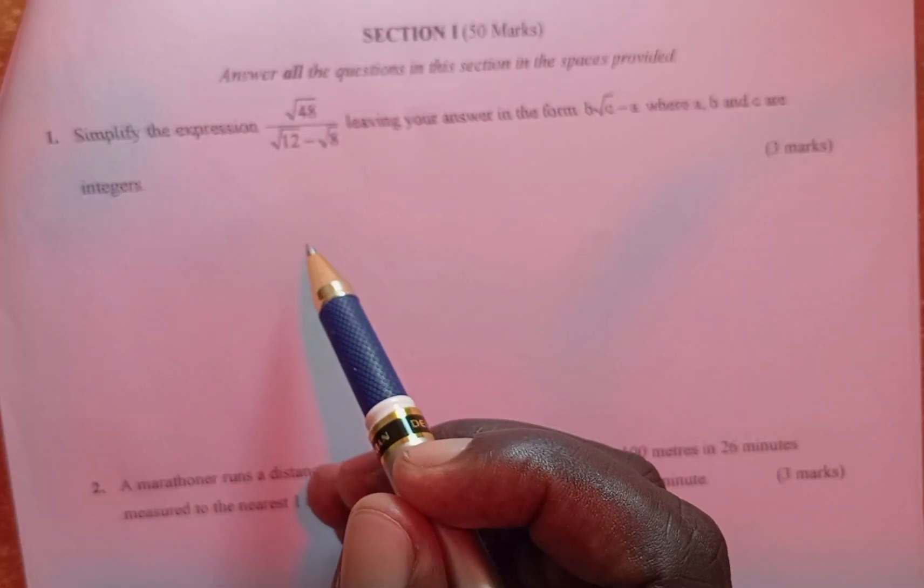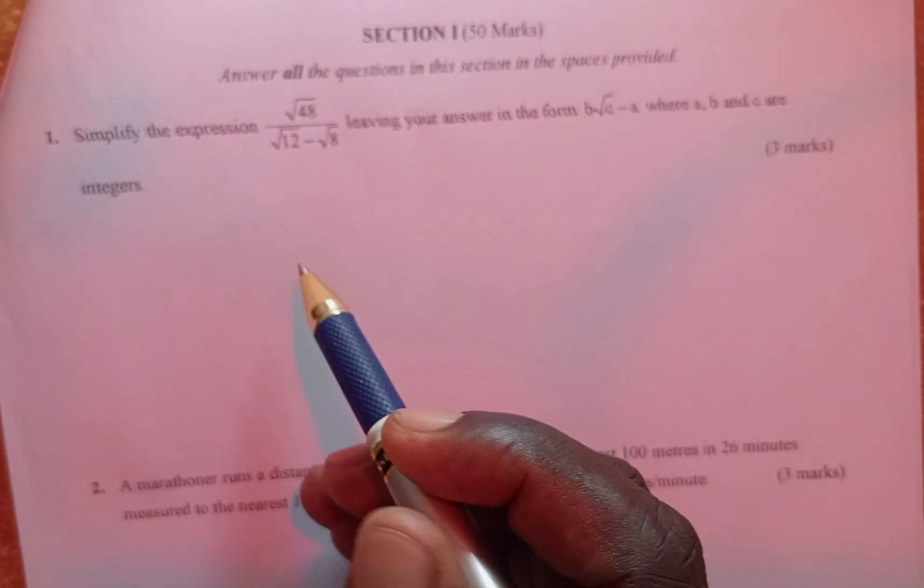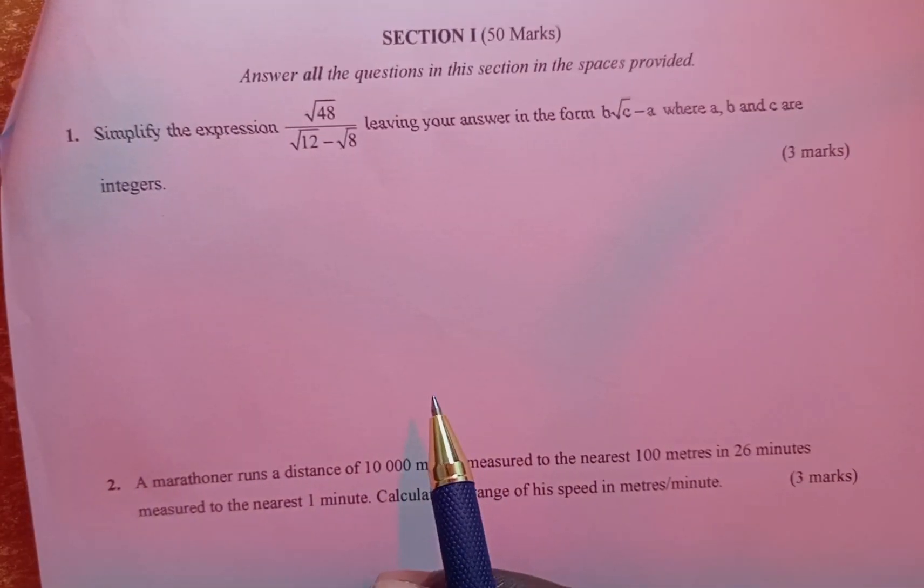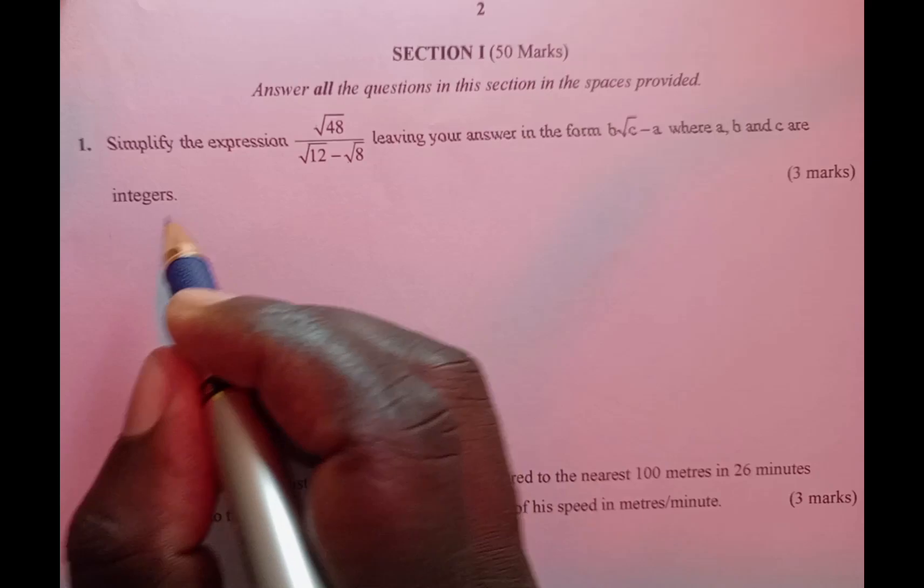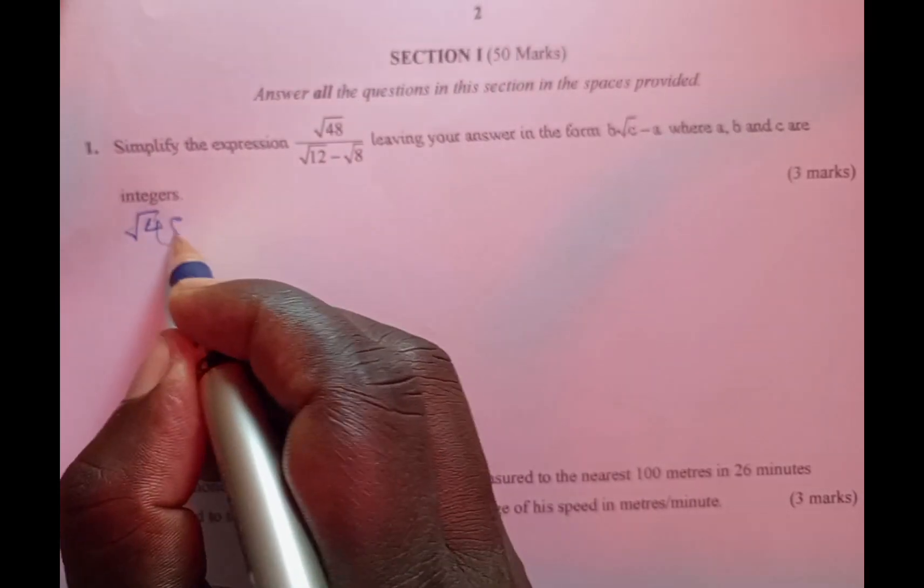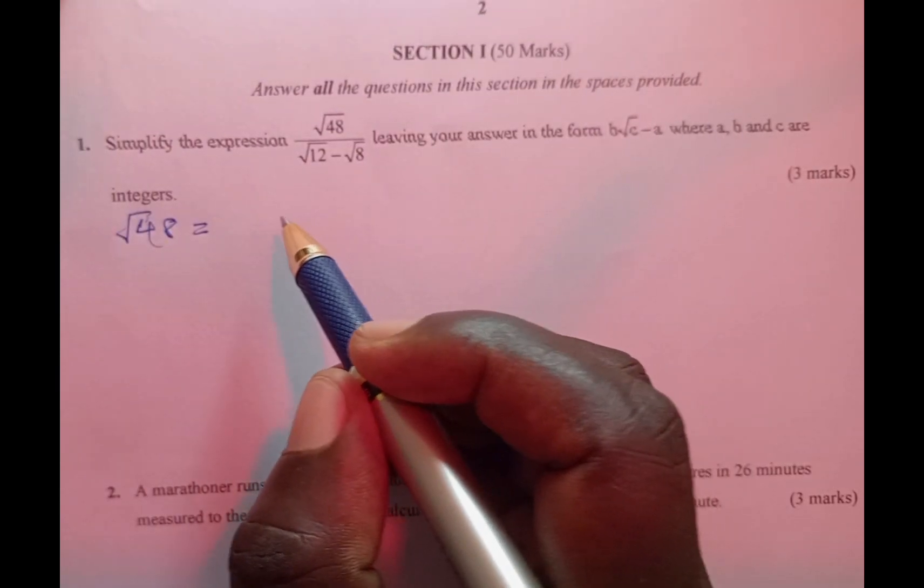The first thing we need to do is to simplify the given surds. So we are going to begin with the root of 48 and simplify it.